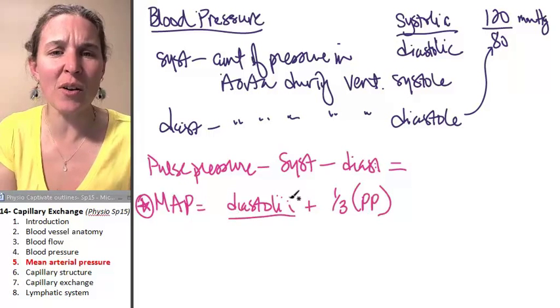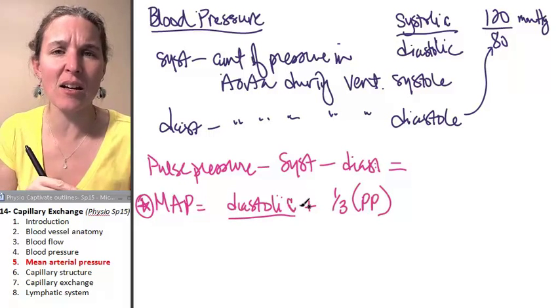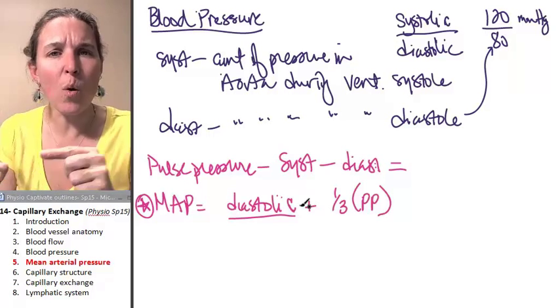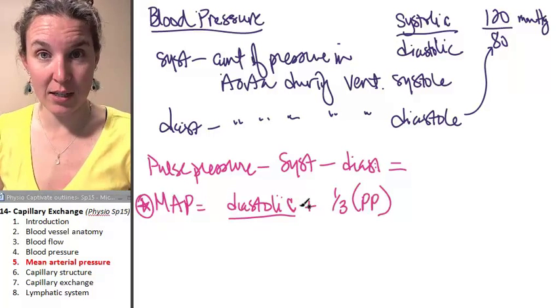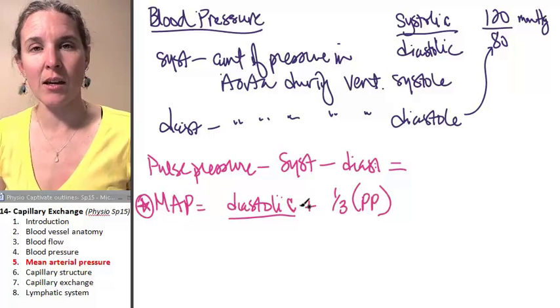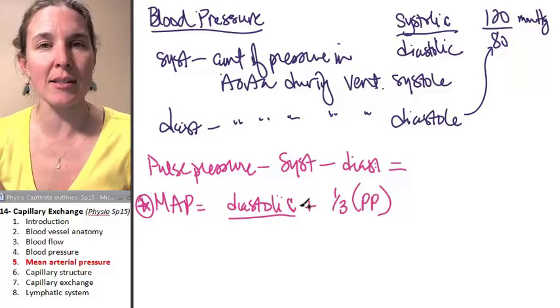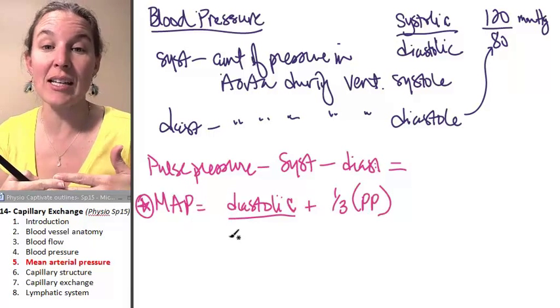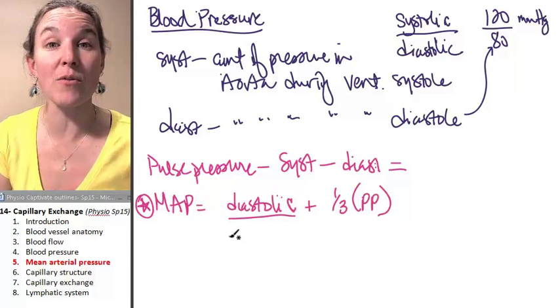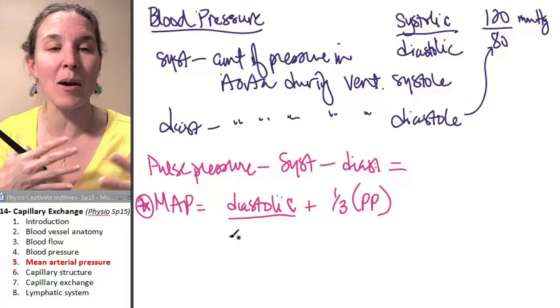You might be wondering why diastolic is weighted more. It's because over time, your heart is in diastole much longer than it is in systole. And so this number, the mean arterial pressure, actually lets you accommodate for that amount of time.